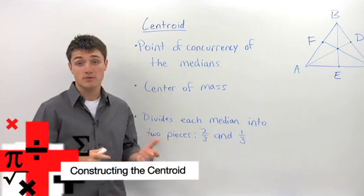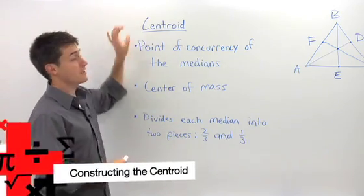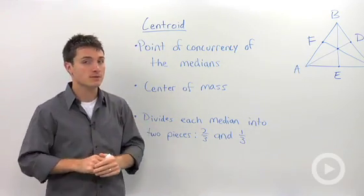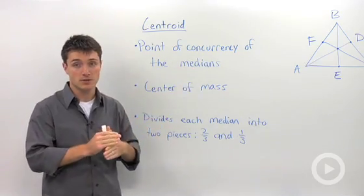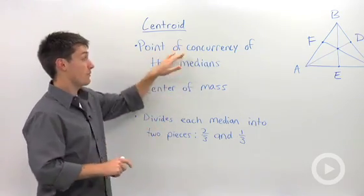One of the four main types of points of concurrency in a triangle is the centroid. A couple key things about the centroid. The first is that it's where the three medians intersect each other. That's a definition of a point of concurrency.